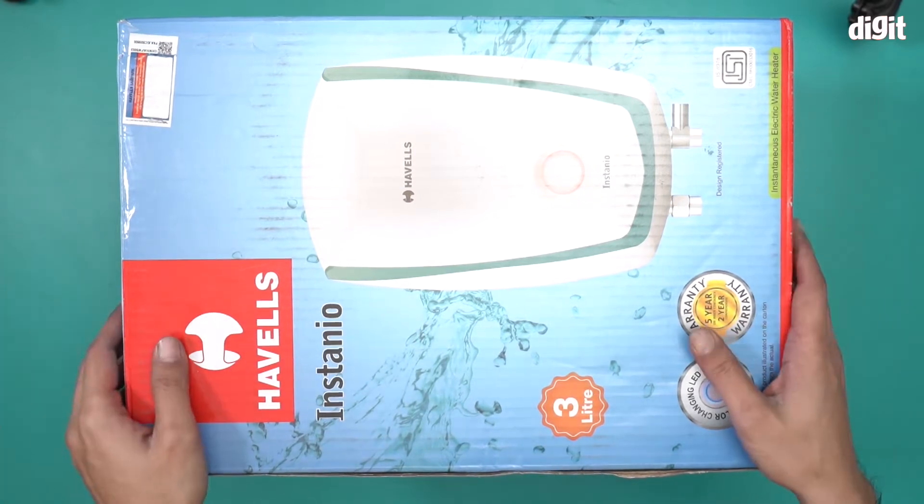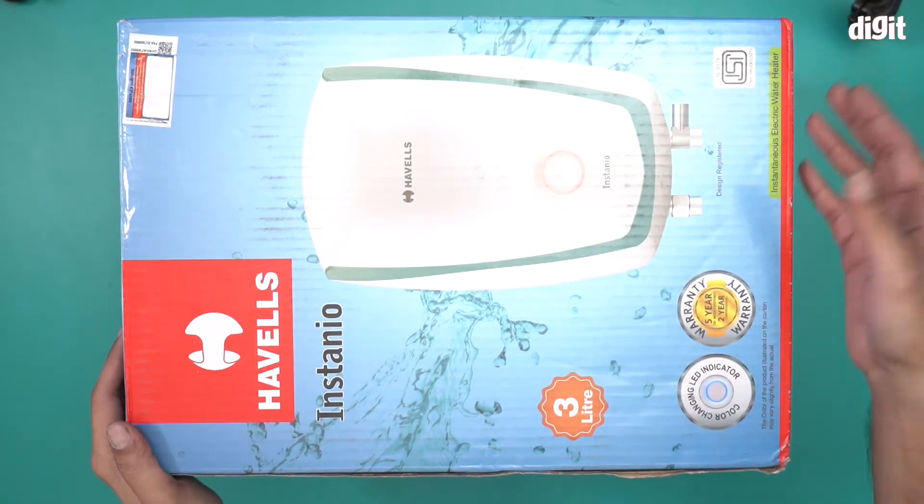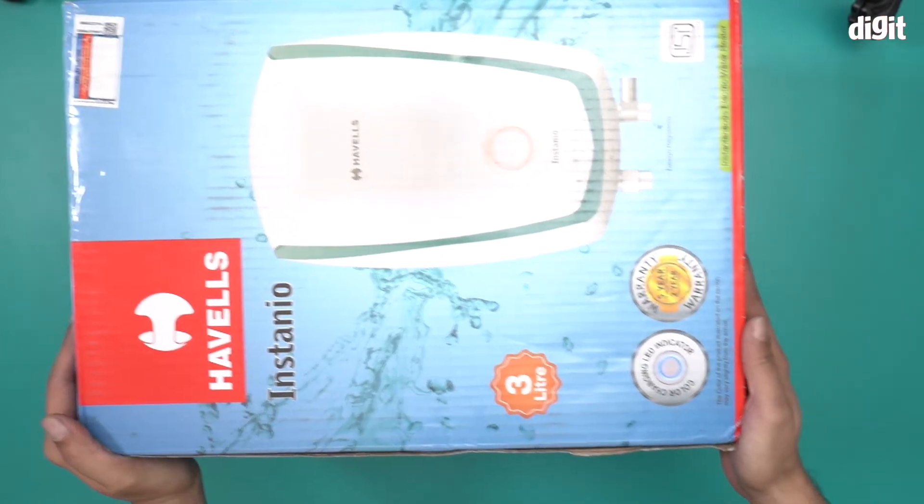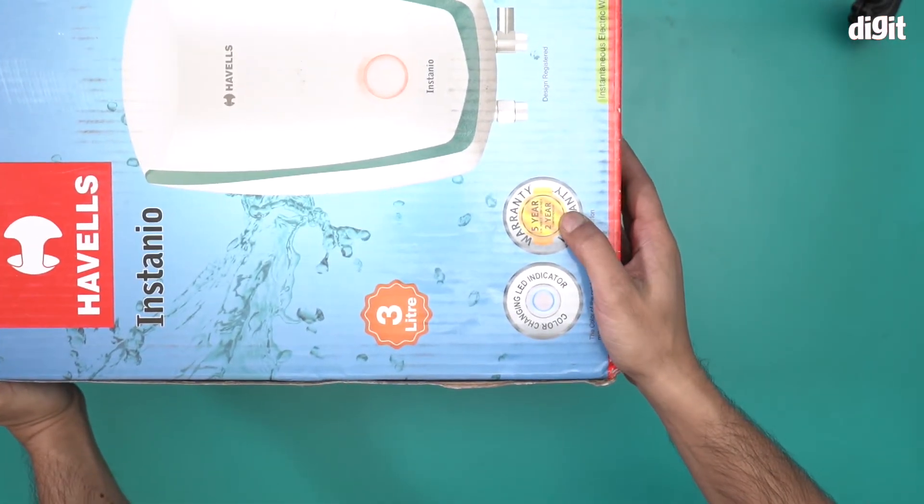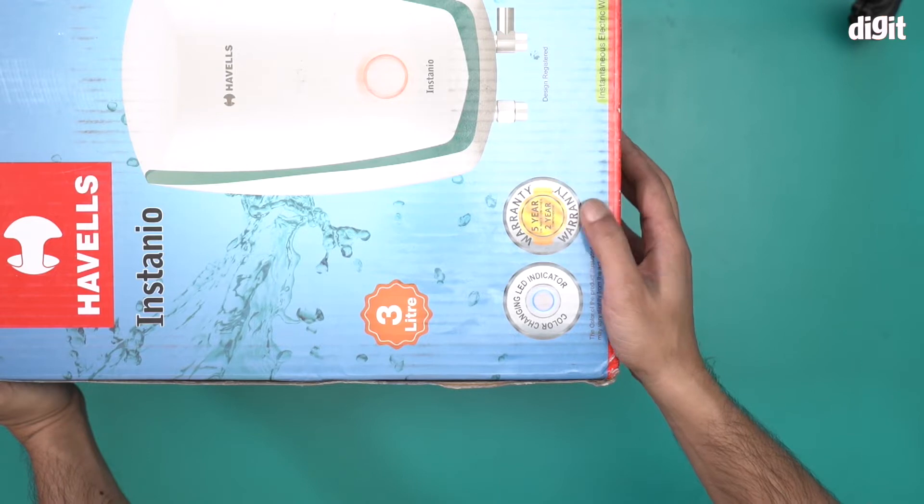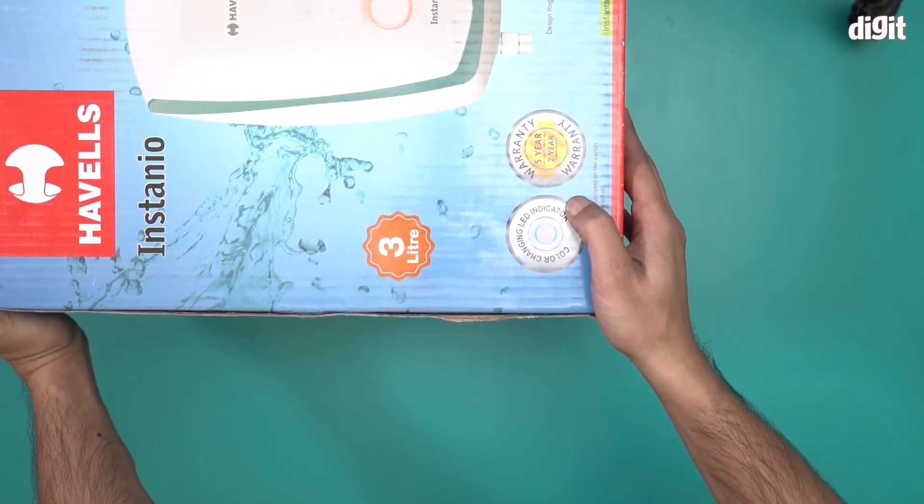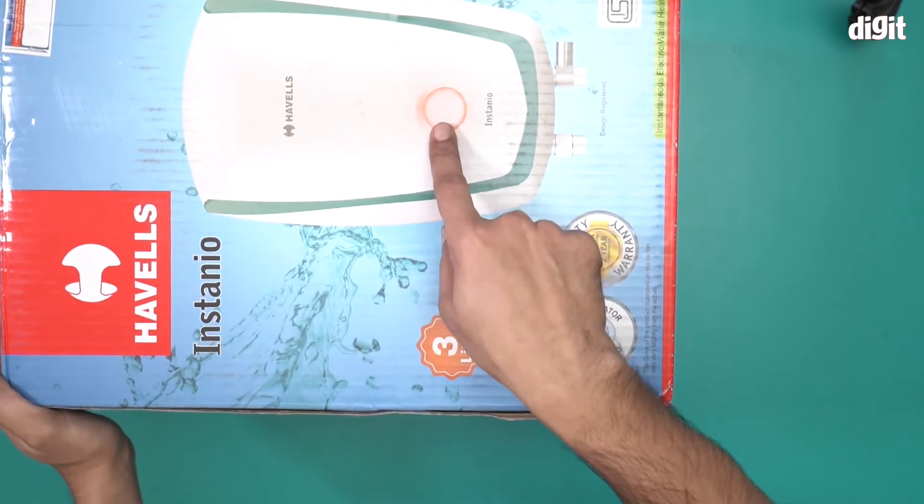A geyser that you attach to the wall of your bathroom to get hot water. This particular heater is ISI certified. It comes with five years warranty on the inner container and two years comprehensive warranty. It also comes with a color-changing LED indicator. This is the indicator in question.